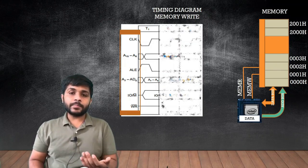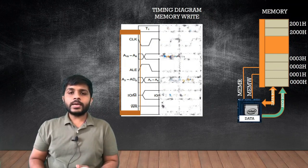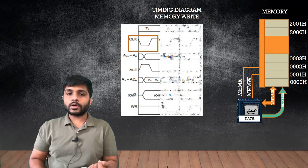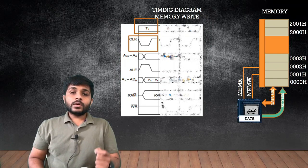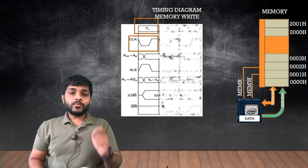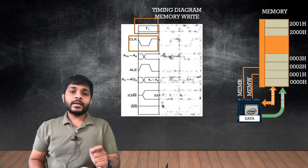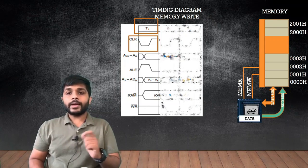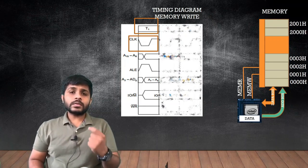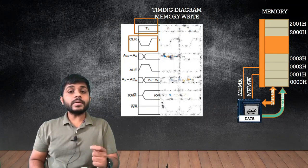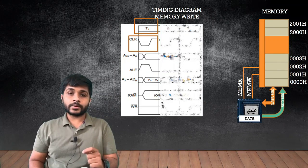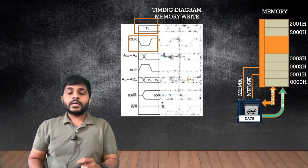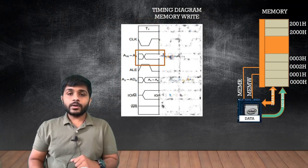There is also the IO/M-bar and the read-bar, which are control signals. Now let's look at the first signal, which is the clock. The T-state is defined as the period from where the clock starts to where it ends at the same point. When the clock completes one cycle, it is considered as one T-state.